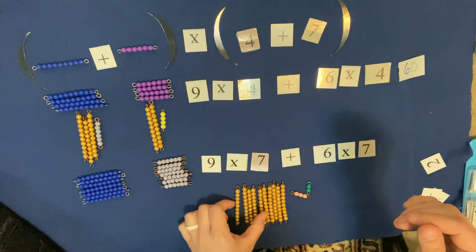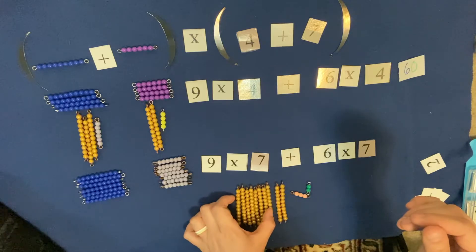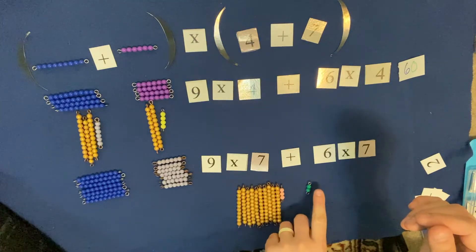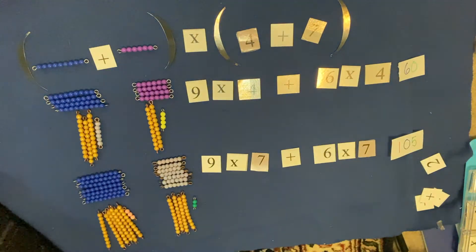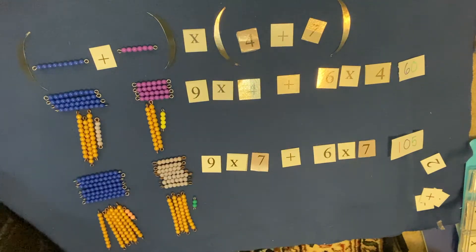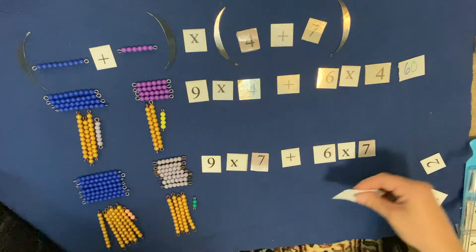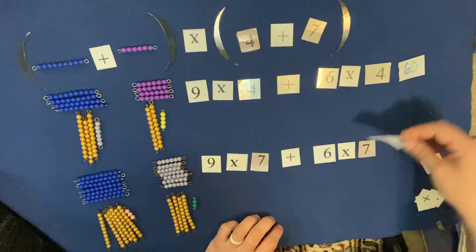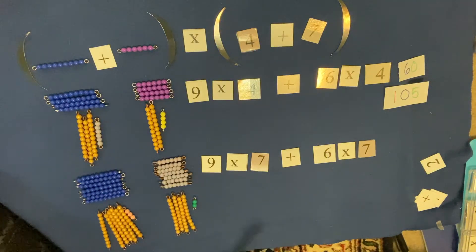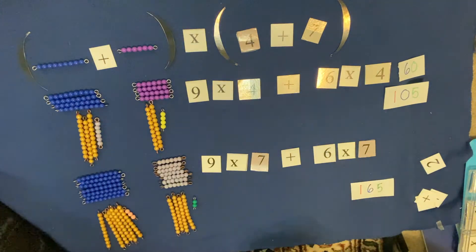Ten, twenty, thirty, forty, fifty, sixty, seventy, eighty, ninety, one hundred, one hundred three, one hundred four, one hundred five. So that equals one hundred five. And in order to get our final answer, we have to add these together. So sixty plus one hundred five, that equals one hundred sixty-five.